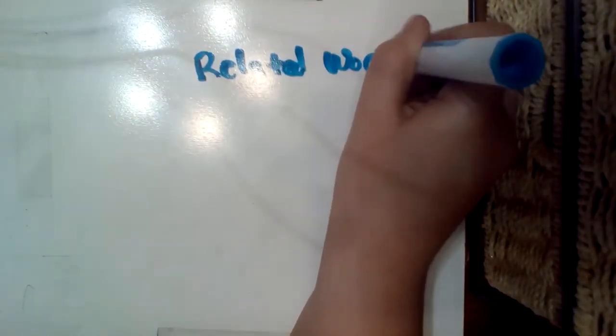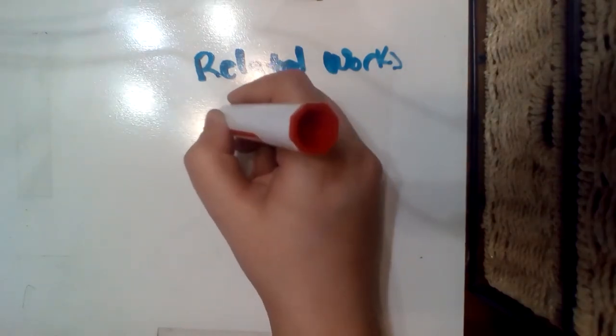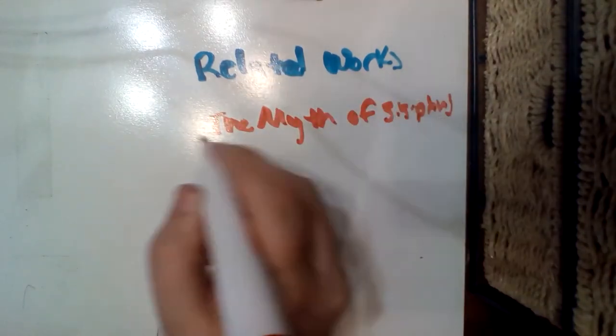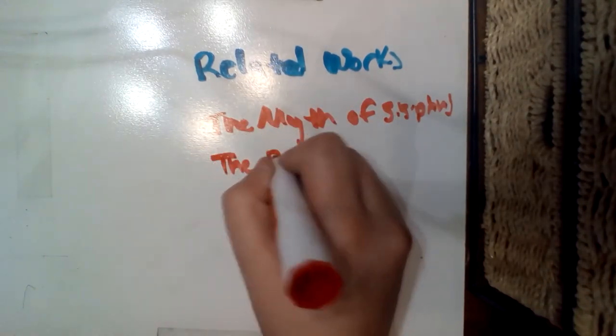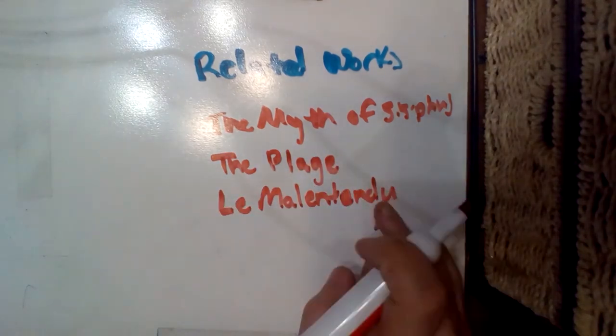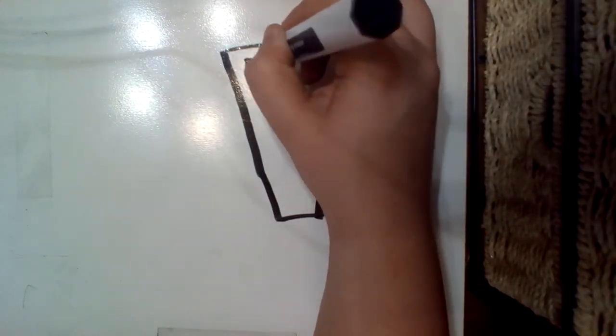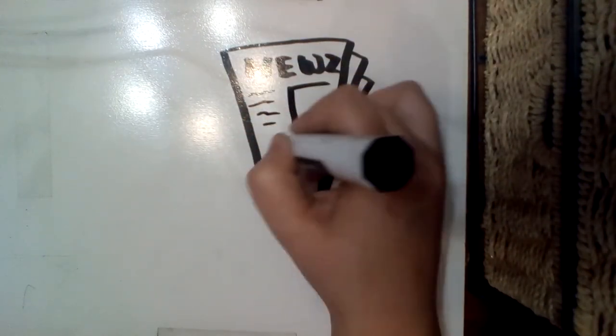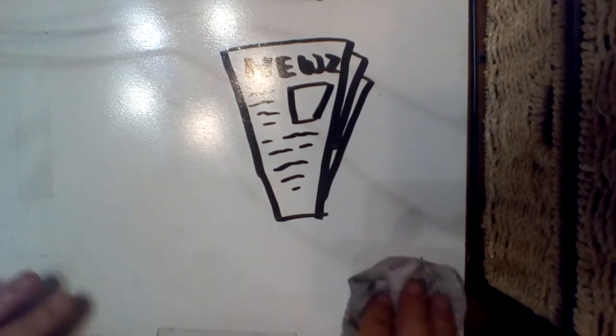Some of the most famous works of Camus included The Myth of Sisyphus, an essay about existentialist theory, his novels The Stranger and The Plague, as well as Le Malentendu, a play with a plot mentioned in The Stranger through a newspaper article Meursault finds in his cell.